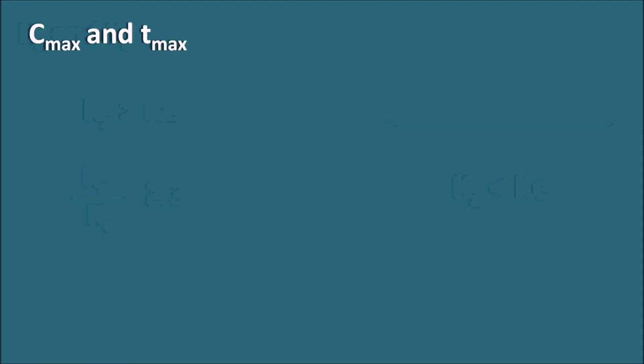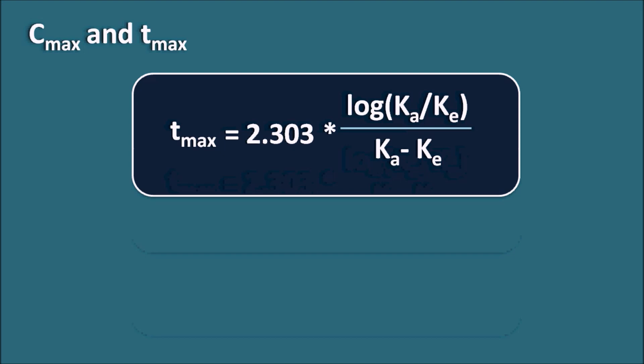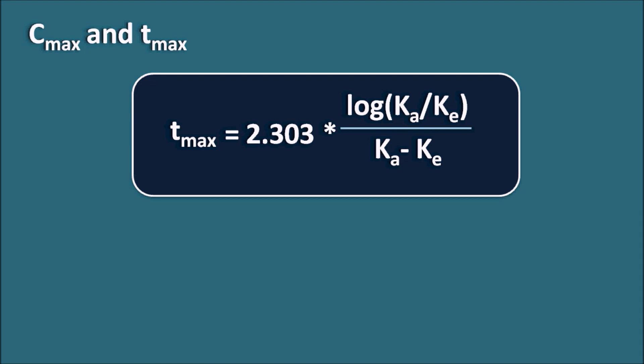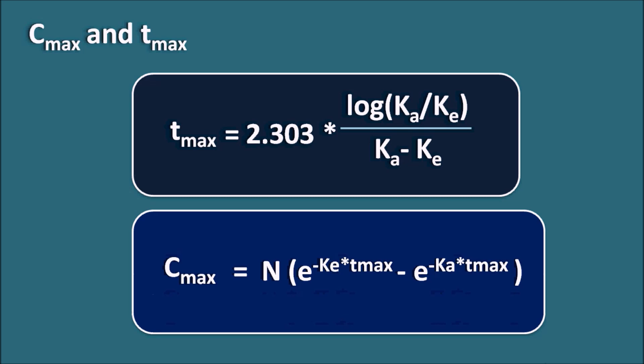T-max is given by the formula: 2.303 times log(Ka/Ke) divided by (Ka minus Ke). The denominator Ka minus Ke confirms that Ka is always greater than Ke under normal conditions. C-max is the maximum concentration achieved at time t equals T-max, calculated by substituting the T-max value into the kinetic equation: C-max equals N times (e to the power of minus Ke·T-max minus e to the power of minus Ka·T-max).